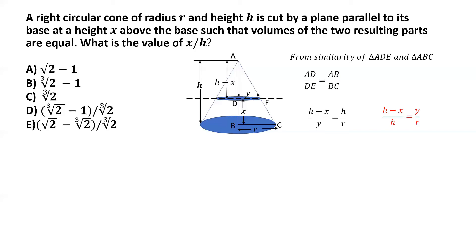Now let's find the volume of the bigger cone. The volume of a right circular cone of radius r and height h is one-third pi r squared h. This is a formula worth remembering, though some standardized tests do supply basic geometry and mensuration formulas.